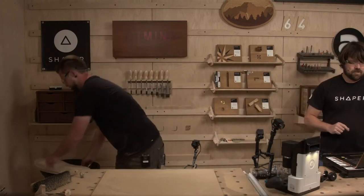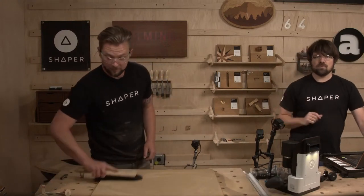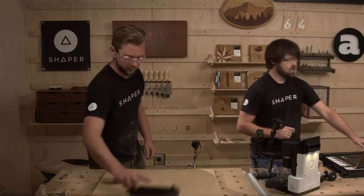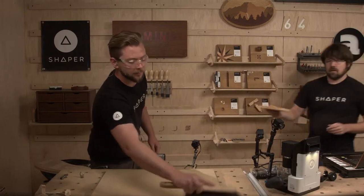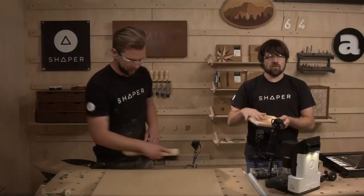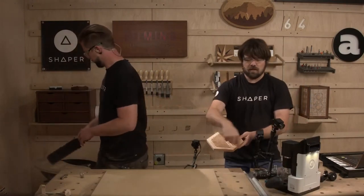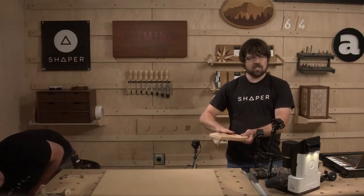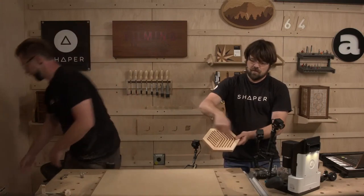Next up, we're going to look at a project I just uploaded to Shaper Hub — a little trivet. It's an interesting one in that it involves cutting from the top and the bottom. For the first pass, you cut all the internal detail and then cut the perimeter as you ordinarily would with Origin. Then the challenge is keeping track of the orientation of this, flipping it over, and cutting the backside — just half depth for each one.